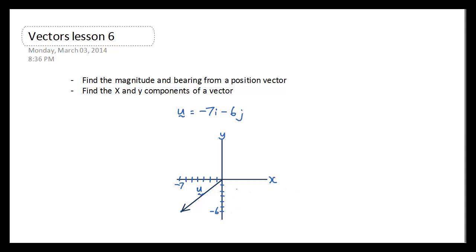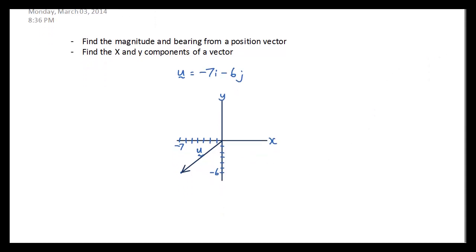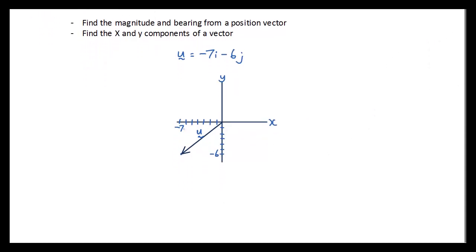Now let's find the magnitude and bearing of it. The first thing you're going to do is form a right angle triangle from the head of this vector to the x-axis.